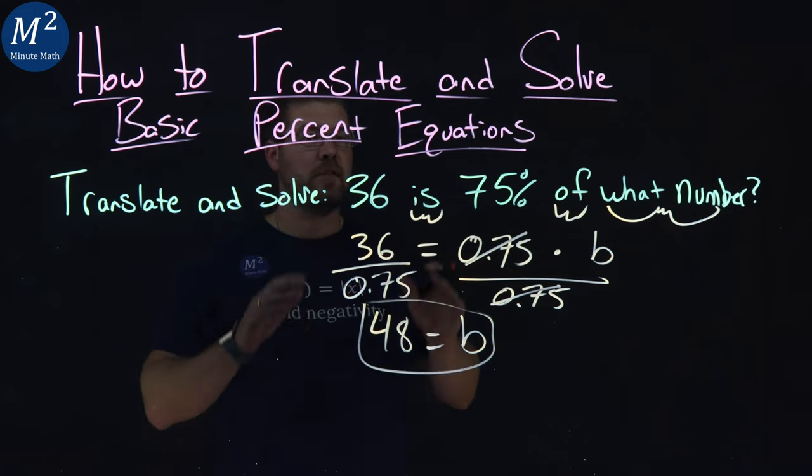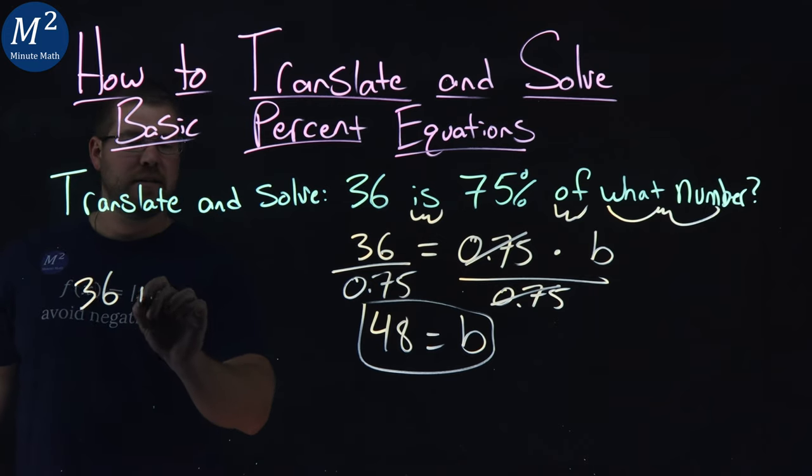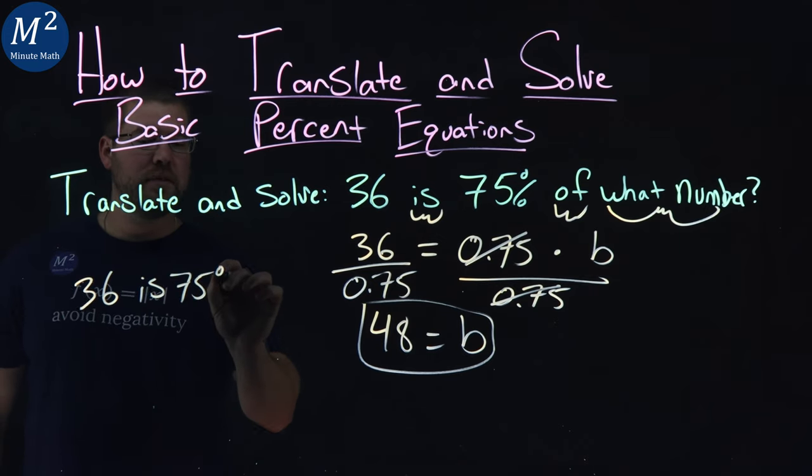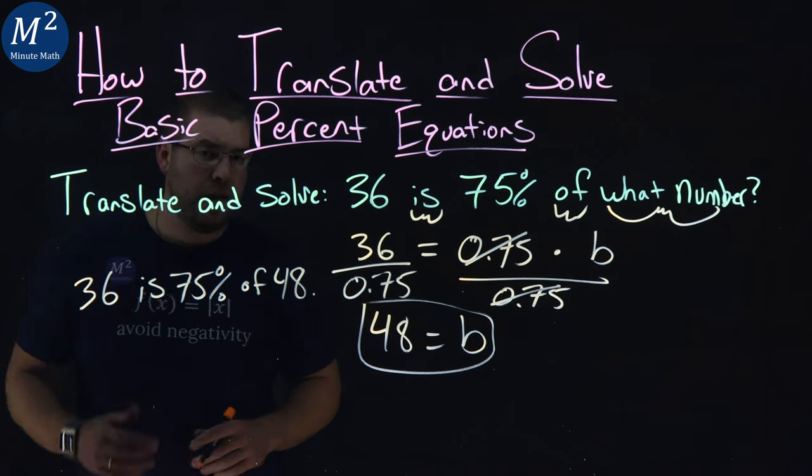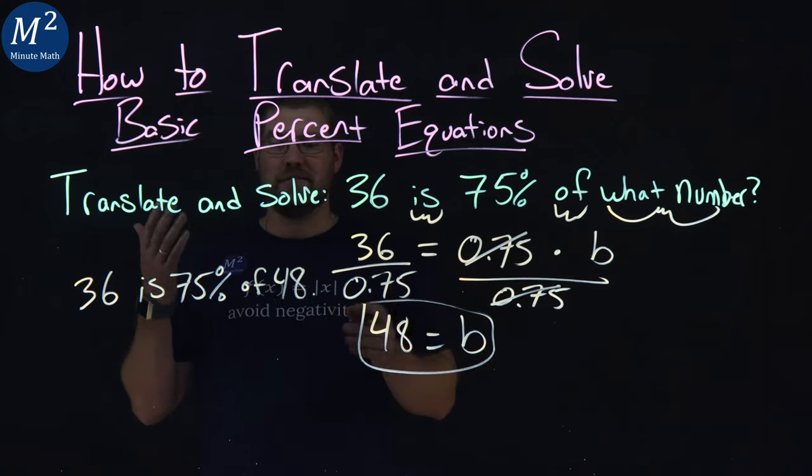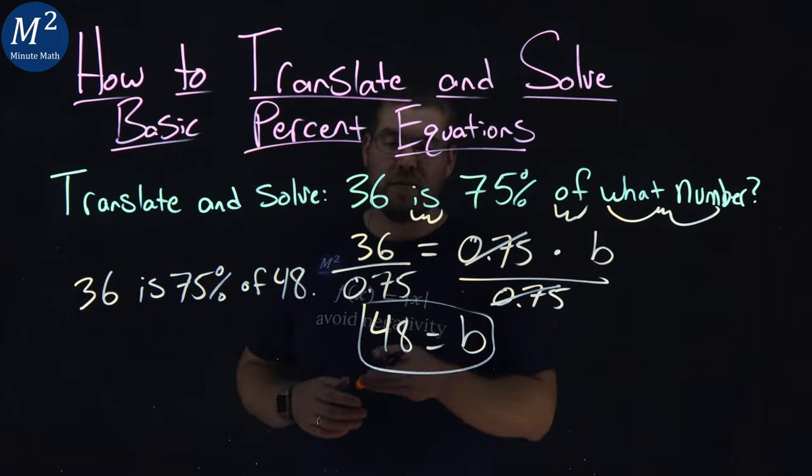So b is equal to 48, so we can rewrite this statement to be this. 36 is 75% of a 48. And there you have it, our answer here is, well, 48. 36 is 75% of 48.